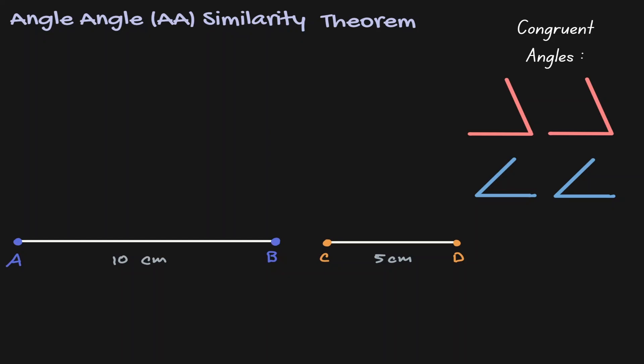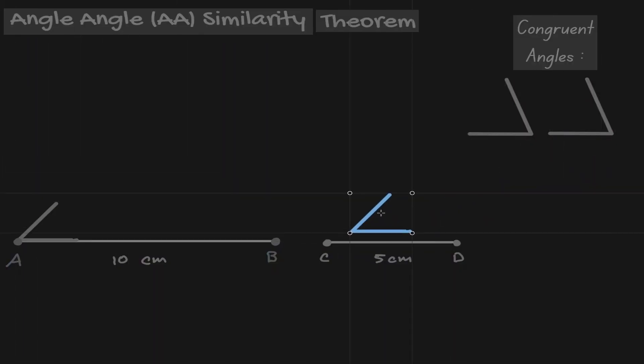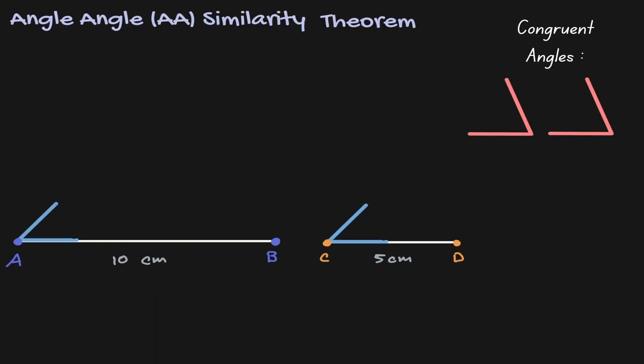Let's get those blue congruent angles and assign them on the left hand side of each of those line segments. And now let's get those red congruent angles and assign them on the right hand side of each of those line segments.